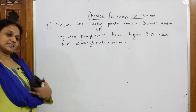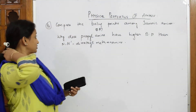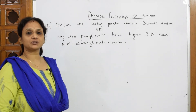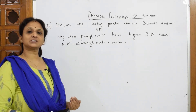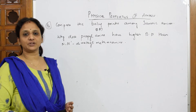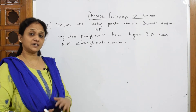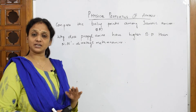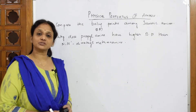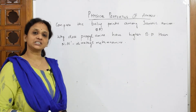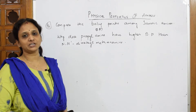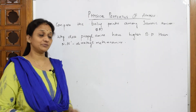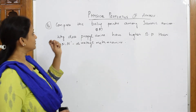Let us come back and see this question — one more question based on boiling points. We have understood the concept that whenever there is hydrogen bonding, and that hydrogen bonding varies between a nitrogen atom and an oxygen atom. Nitrogen is less electronegative, so the boiling point was less compared to alcohols and carboxylic acids.